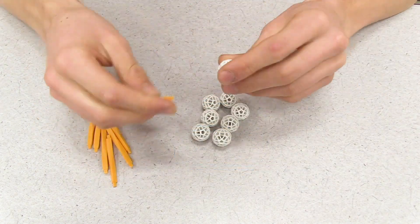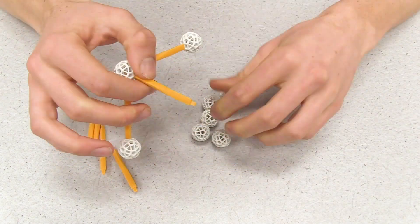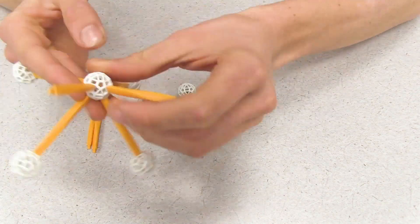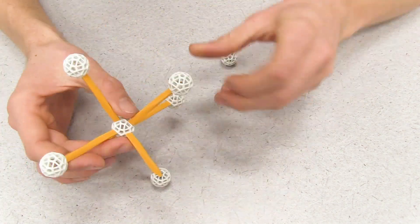Then for body-centered cubic, we're going to start with a single ball in the center of a cube and connect to eight other balls at the corners with sticks.